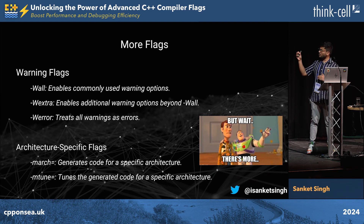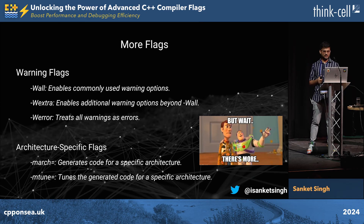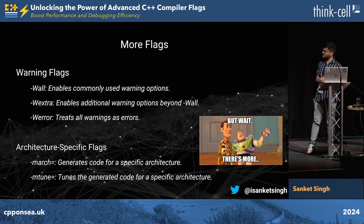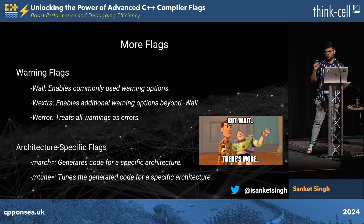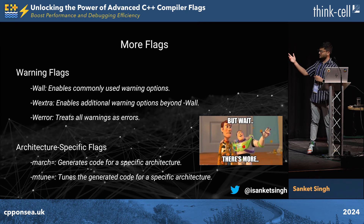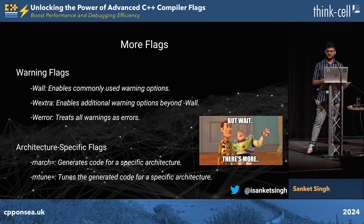There are a couple more warning flags that you can use — I have listed all of these on screen. For example, `-Wextra` is going to enable additional warnings beyond `-Wall`, and `-Werror` is going to treat all warnings as errors. Then there are architecture-specific flags as well, which help you generate code according to a specific architecture. There are some default values that both of these flags take, and depending on what value you give, the other flag also gets tuned accordingly.